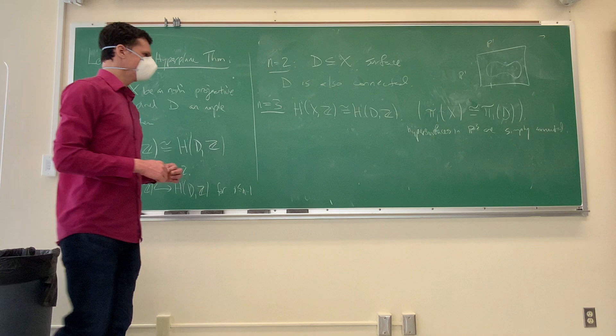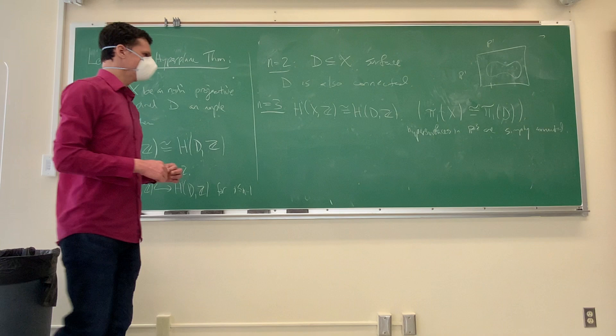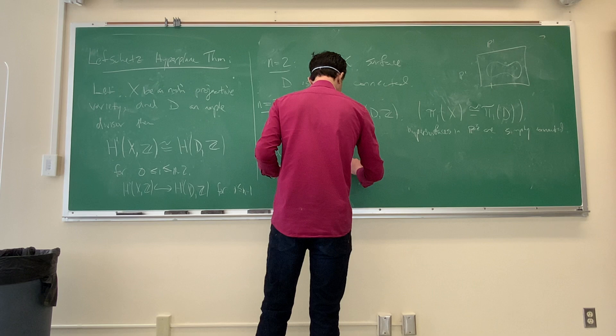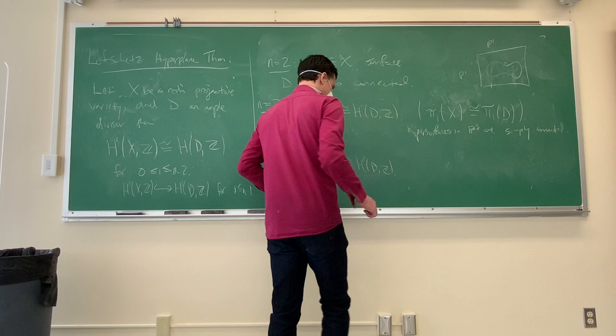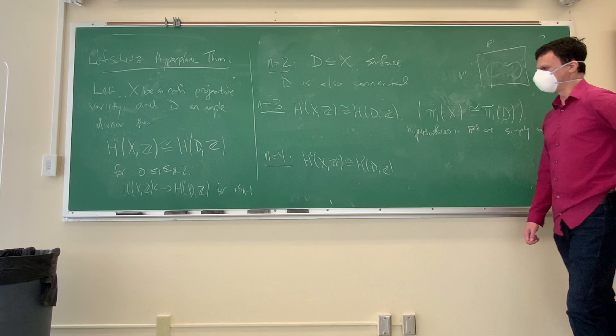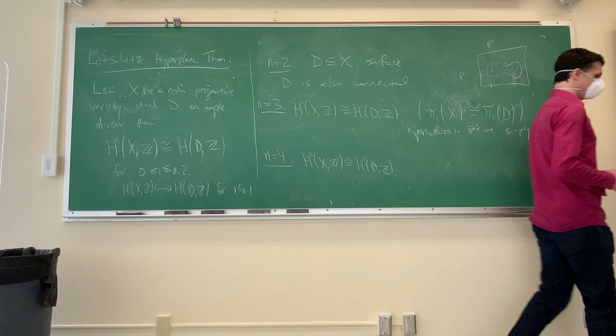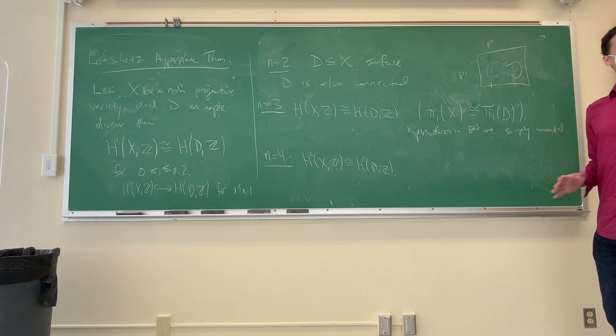The next case is N = 4, where we get H^2(X; Z) ≅ H^2(D; Z) along with all the previous ones. When D is smooth, H^2(D; Z) can be thought of as a Chern class of some line bundle. The H^2 classes that come from Chern classes of line bundles are the H^{1,1} part in the Hodge decomposition, and the restriction map is going to respect the Hodge decomposition.